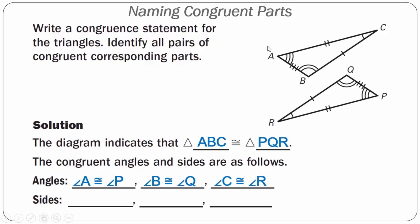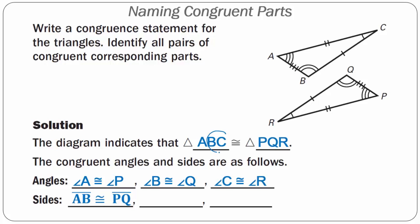For sides, line segment AB is the first and second letters of triangle ABC, so it is congruent to the first and second letters of triangle PQR, which is line segment PQ. You can see AB has three tick marks and so does PQ. Next, BC is the second and third letters of triangle ABC — it has one tick mark — and is congruent to QR, which also has one tick mark and is the second and third letters of triangle PQR. So line segment BC is congruent to line segment QR.